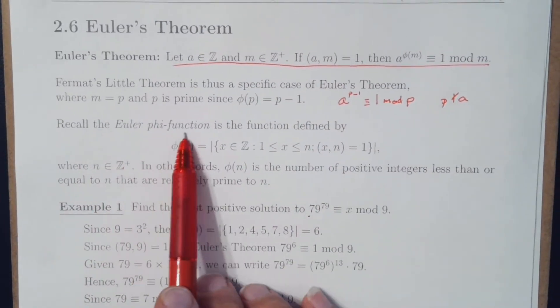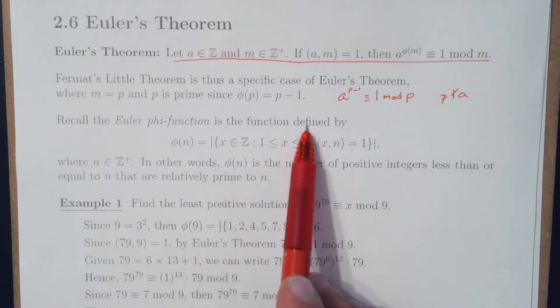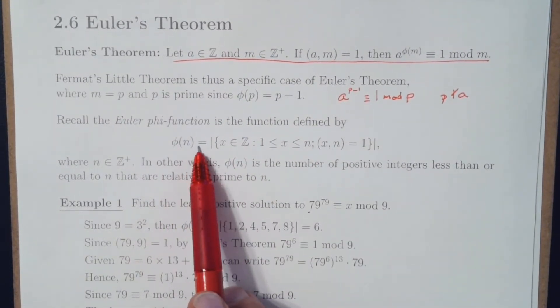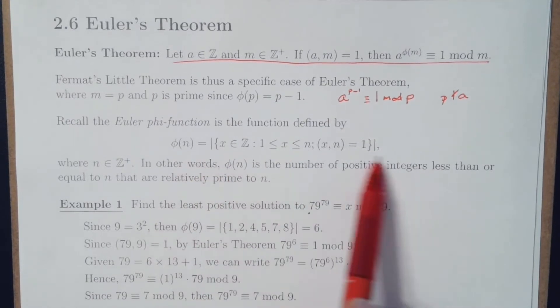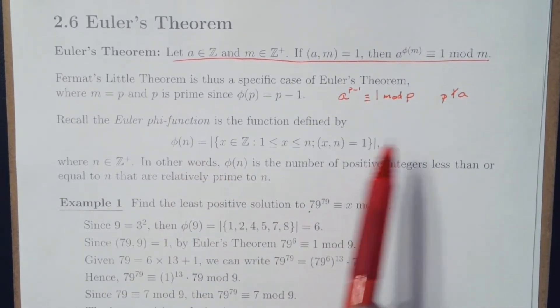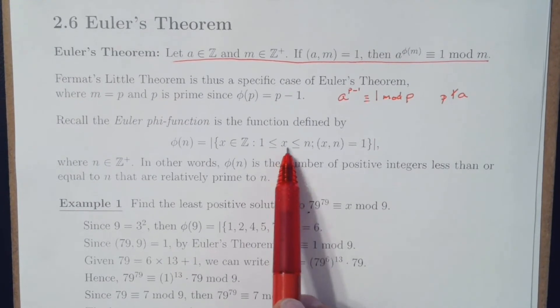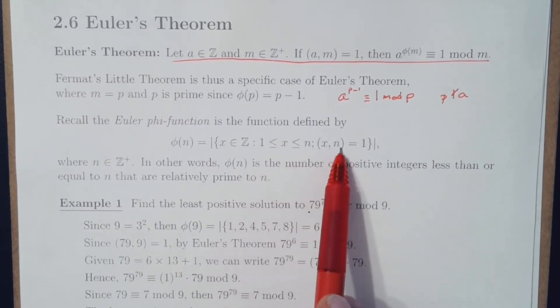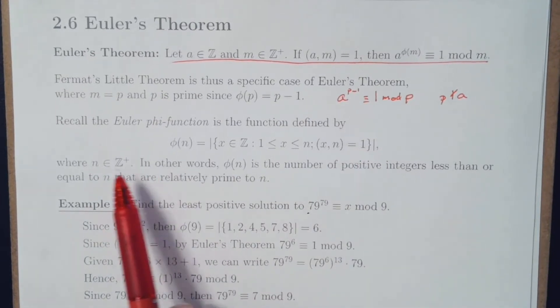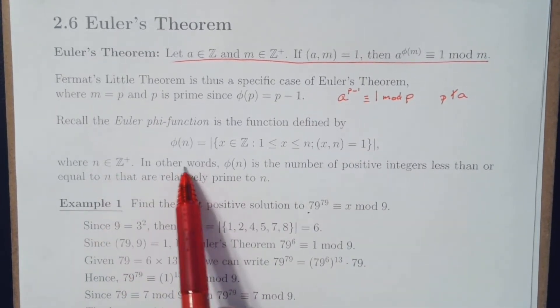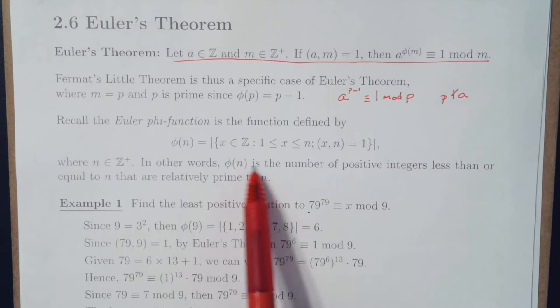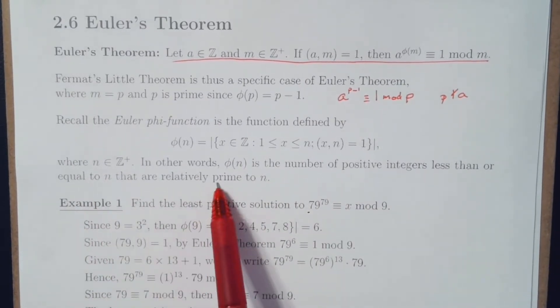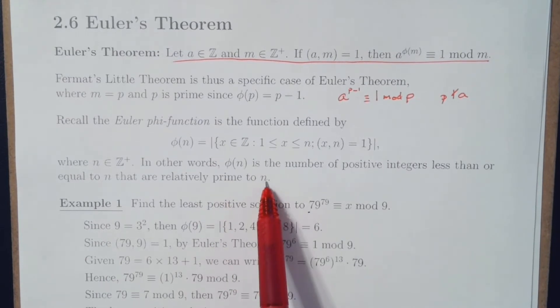Now, recall that this Euler phi function is the function defined by phi of n is the number of positive integers less than or equal to n that are relatively prime to n.